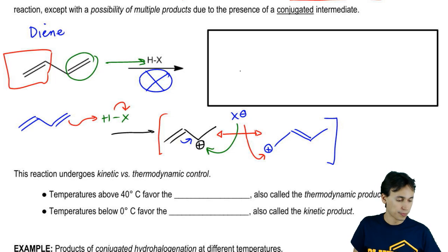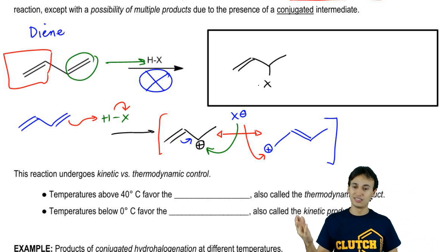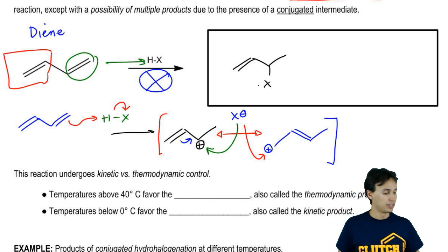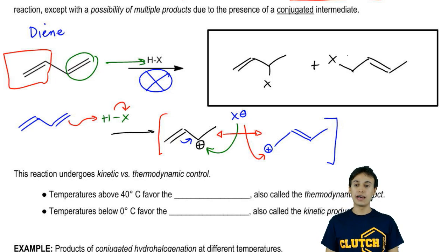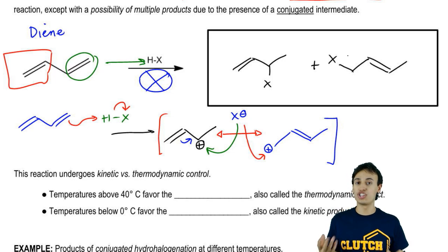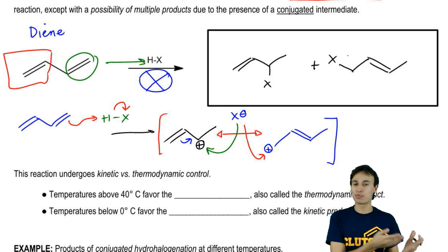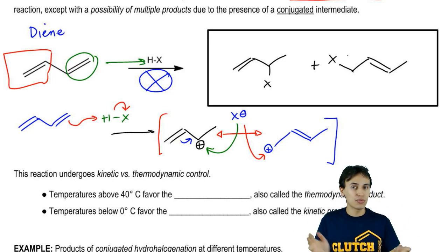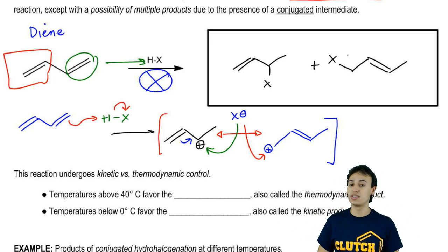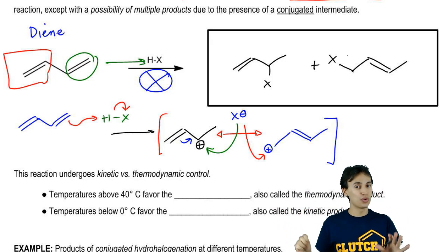Let's draw these two products. One product has the allylic halogen at one position, and the other has the allylic halogen at the other position. This looks similar to what you'd get from allylic halogenation using radicals, but the reaction and mechanism are completely different — one uses radicals and this one uses carbocations.